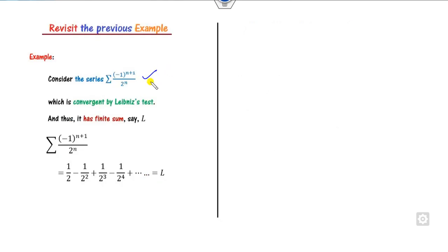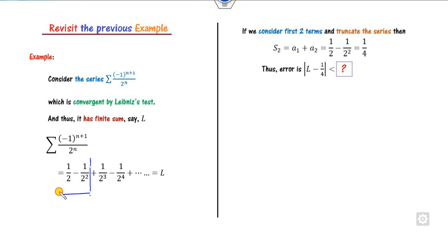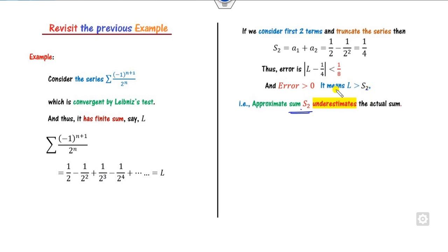For example with the same series, if we consider the first two terms, S_2 will be 1/2 minus 1/4, which is 1/4. According to the estimation theorem, the bound is the next unused term, which is 1 over 2 raised to power 3, that is 1/8. The nature of the error: the sign of the next term is positive, so the error is positive in nature. That means L minus S_2 is greater than 0, or the approximate sum underestimates the actual sum.